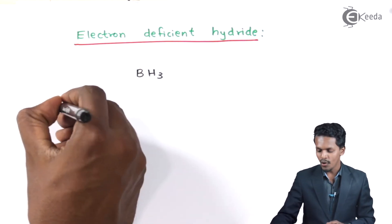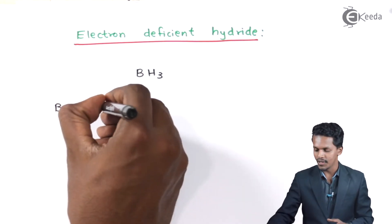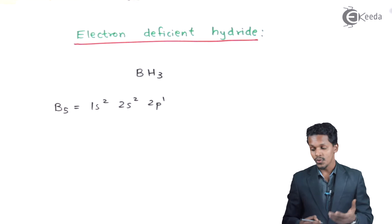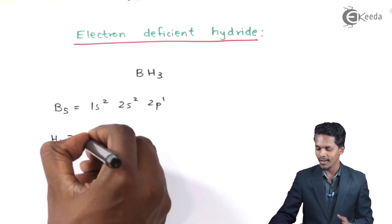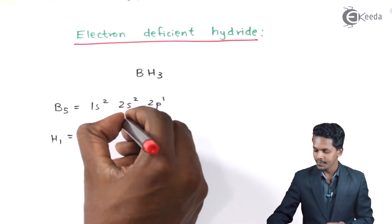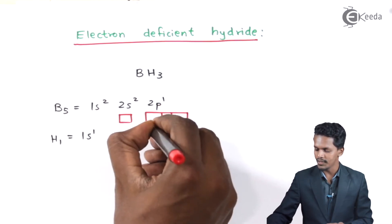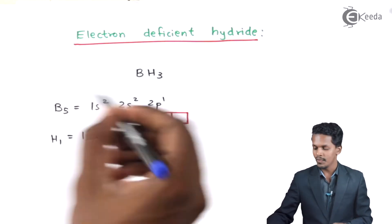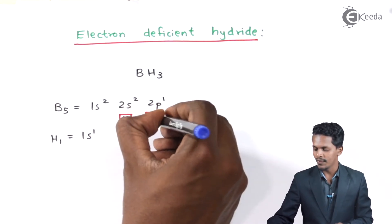The atomic number of boron is 5, so its electronic configuration is 1s², 2s², 2p¹. Hydrogen has atomic number 1, so its configuration is 1s¹. Looking at the orbitals: s has one orbital while p has three orbitals. The s subshell has two electrons and p has one electron.